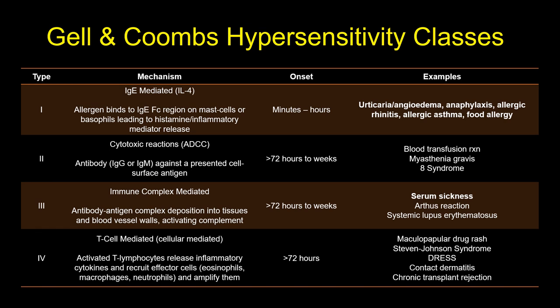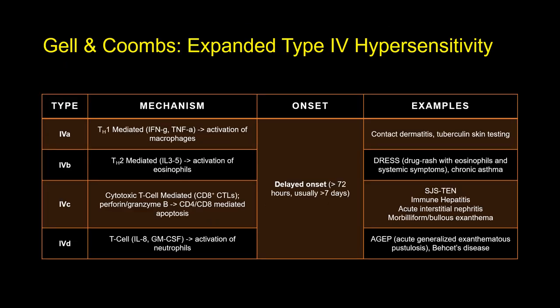Drug hypersensitivity fits mostly into Gell and Coombs type 4 reactions — those which involve T-cell mediated immune reactions that can recruit eosinophils but also neutrophils. Some drug reactions involve pathophysiology more closely resembling type 2 or 3 reactions. We should start to see drug reactions as specific and distinct events rather than manifestations of the same umbrella event of rash. Even type 4 reactions can be split into different sub-mechanisms, and reactions of different mechanisms do not evolve into each other — a patient with a benign morbilliform rash (type 4C) will not necessarily develop the more severe DRESS reaction (type 4B).